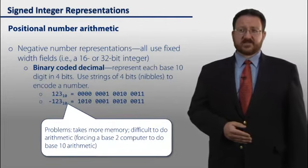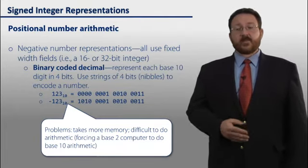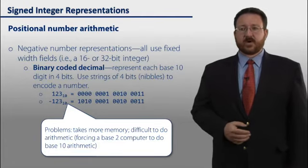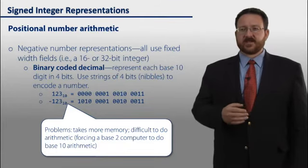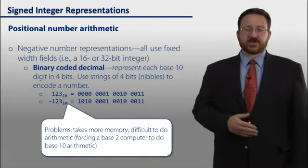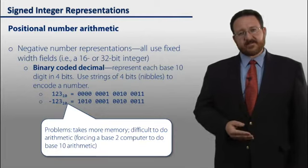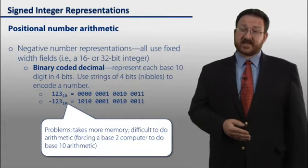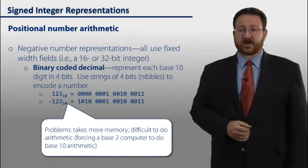Another way of representing this is to use binary coded decimal. In binary coded decimal, we represent each decimal digit as a 4-bit quantity. And so 123 in base 10 becomes all 0s, and then all 0s and a 1, and then 10, and then 11. And the negative number, then, we just encode the minus sign using 1010. So this is both a sign magnitude, but it's also a base 10 representation, forcing a computer to work in base 10. So base 10 is much, much more difficult and requires complex CPU hardware, which we want to avoid.